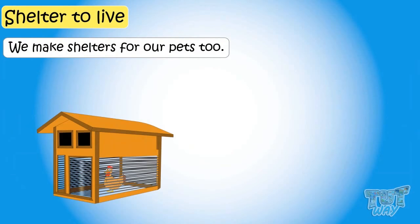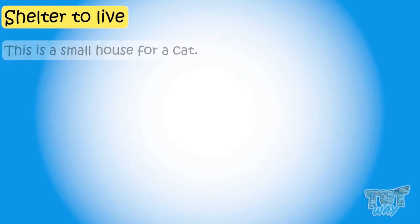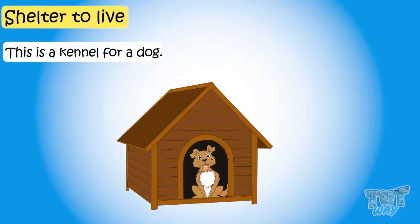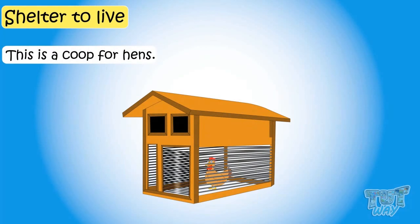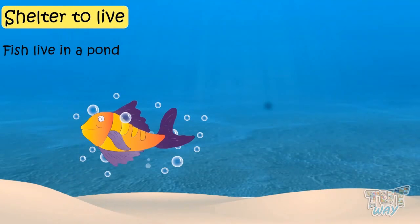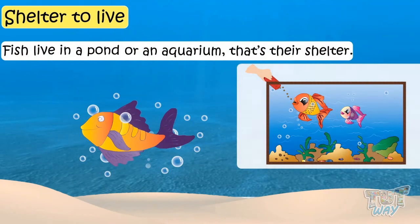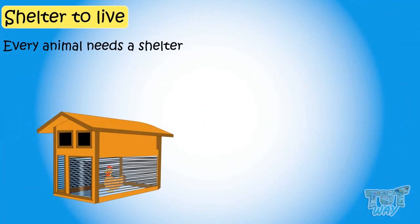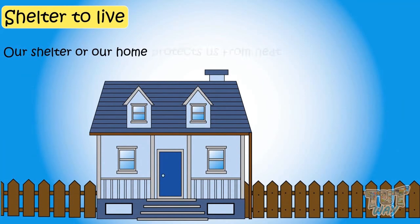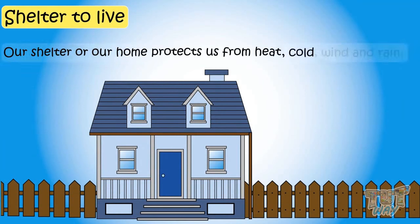We make a shelter for our pets too — like a small house for a cat and a kennel for a dog. This is a coop for a hen. Birds make their own nests to live — that's their home or shelter. Fish live in a pond or aquarium at our home — that's their shelter. Every living animal needs a shelter — their home — which protects them from heat, cold, wind, and rain.